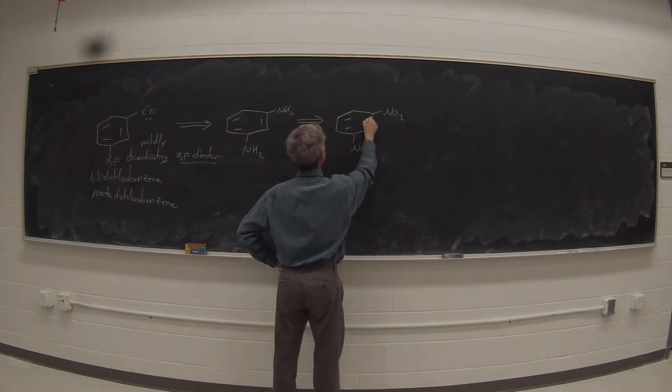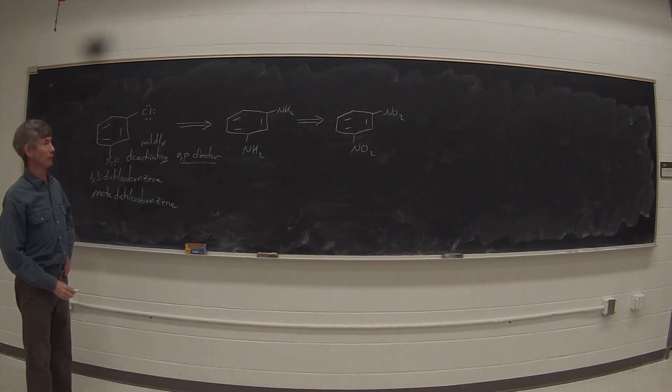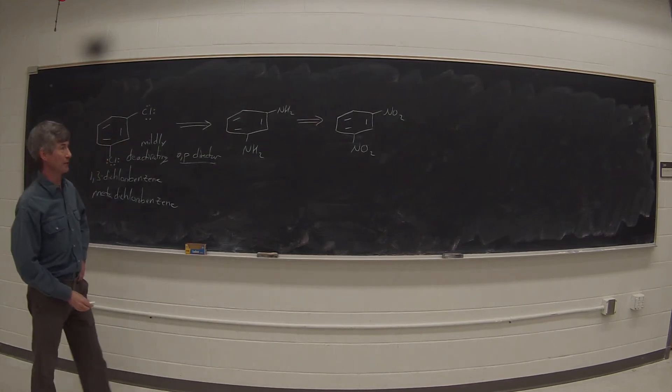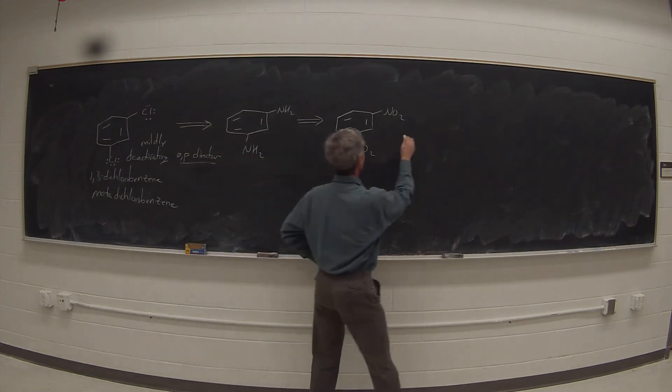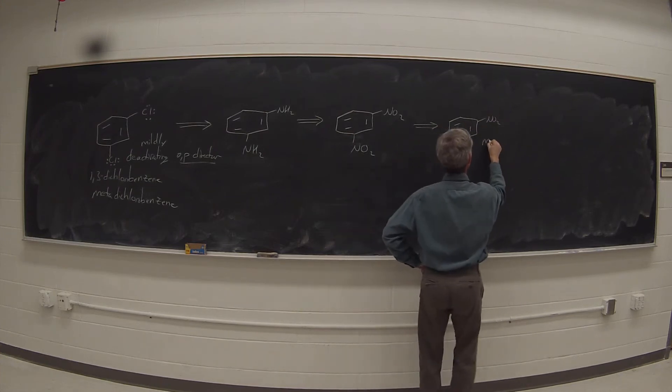So if we had 1,3-dinitrobenzene, it would be a straightforward matter to make that into 1,3-diaminobenzene, and we know that we can get 1,3-dinitrobenzene directly from nitrobenzene, because now this is a meta-director.